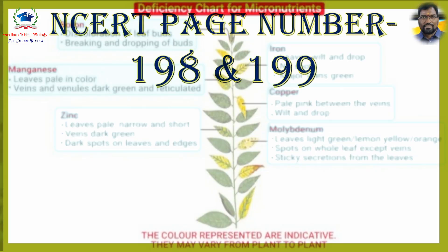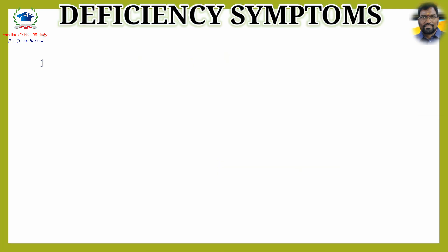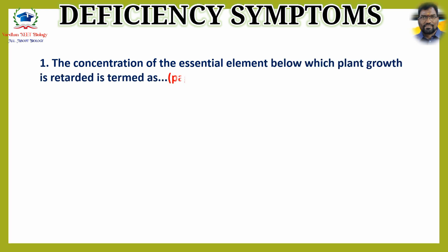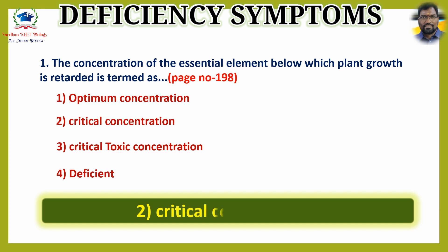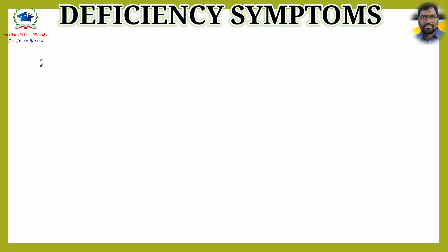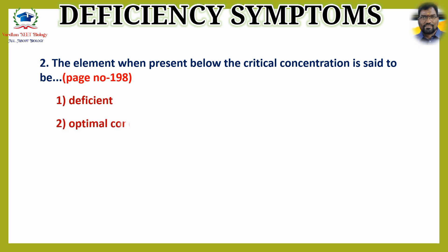NCERT page number 198 and 199, section 12.2.3: Deficiency Symptoms of Essential Elements. Question 1: The concentration of the essential element below which plant growth is retarded is termed as — the answer is option 2: critical concentration. Question 2: The element when present below the critical concentration is said to be — the answer is option 1: deficient.